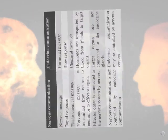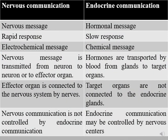In this table comparing nervous and hormonal communication: nervous communication occurs through a nervous message, whereas endocrine communication occurs through a hormonal message. Nervous communication is a rapid response, whereas endocrine is slow. Nervous communication uses an electrochemical message — a combination of electrical potential difference and chemical signals through ion concentration — whereas endocrine communication uses chemical messages through hormones.